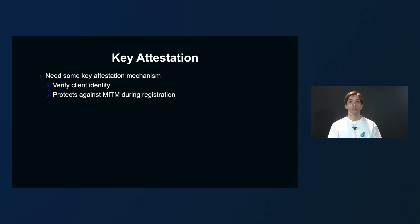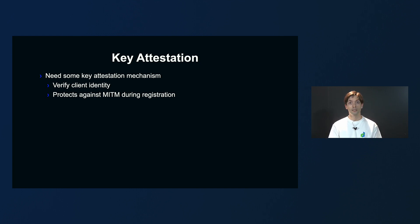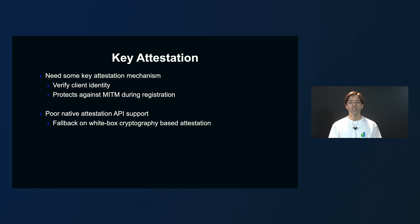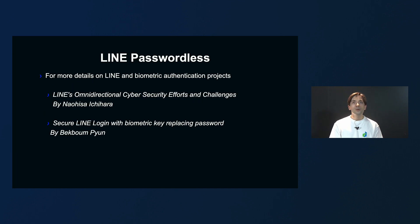Apart from the biometric API, there is one last problem we had to solve, which involves key attestation, as explained earlier by my colleagues. We want a key attestation mechanism to ensure the key has been generated by a legitimate client inside the TEE or SE, which is also important to protect against man-in-the-middle attacks during client registration. Due to the lack of good native support for attestation APIs, we decided to implement our own attestation based on a white-box cryptography implementation. For more details on how LINE is using biometric authentication, you can watch the following talks by our colleagues listed on this slide.